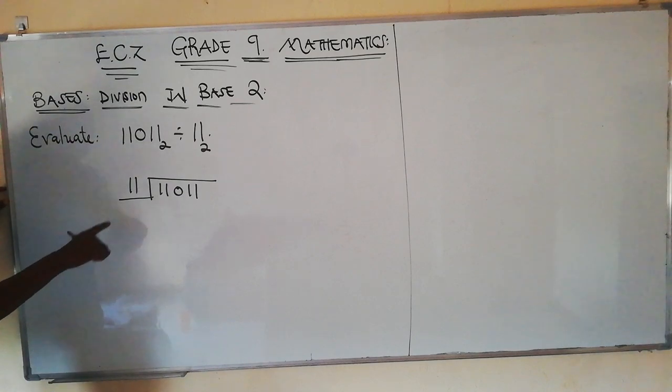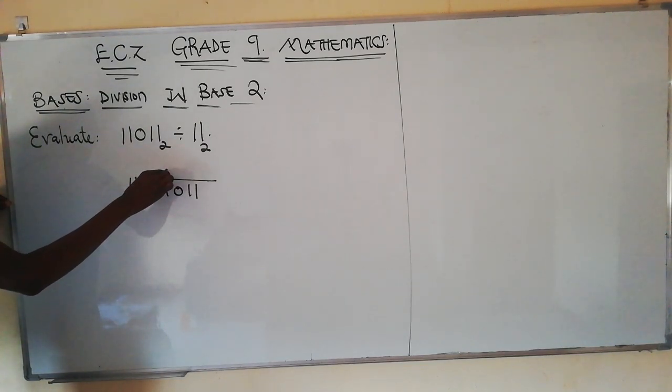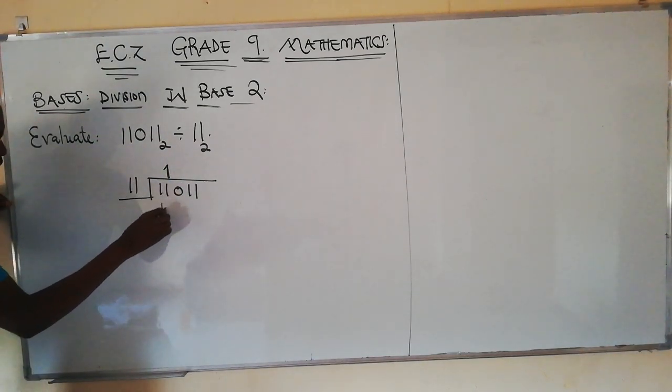So we start dividing. What is 1 divided by 11? It can't, that we know. So we divide now 11 by 11. What is 11 divided by 11? The answer will be 1. Then we multiply 1 by 11, we get 11.